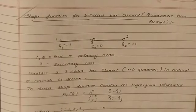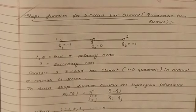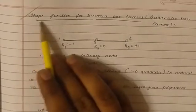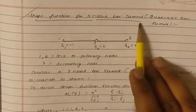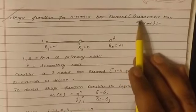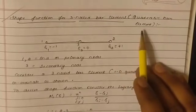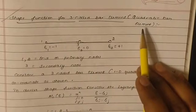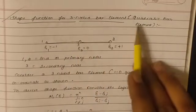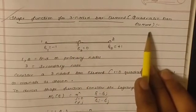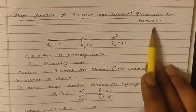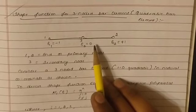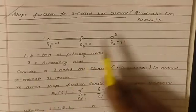Hello students, welcome back. Next we'll move on to the next derivation — the shape function for a 3-noded bar element, also called a quadratic bar element. You have to be very careful in the exam; the question might be asked as either '3-noded bar element' or 'quadratic bar element,' so you need to understand the right thing and write the proper derivation.